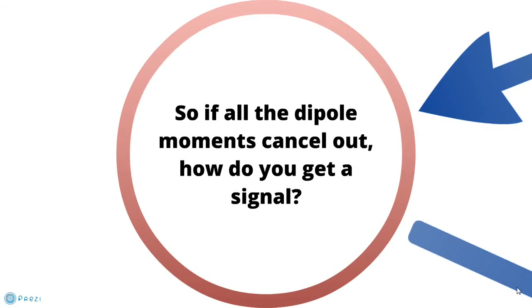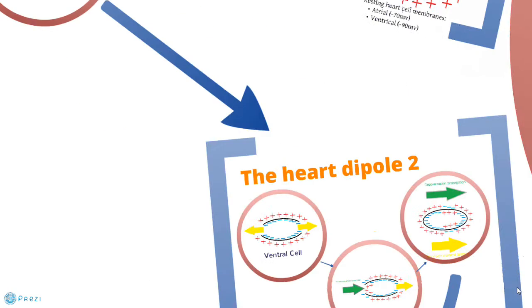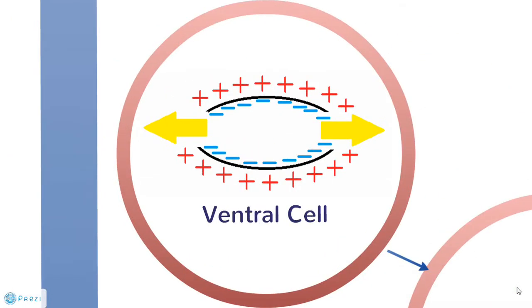So if all the dipole moments cancel out how do you get a signal? If we take this picture to represent a resting ventricle cell we do indeed get a zero dipole moment from the cell where you do not get a signal on an ECG.